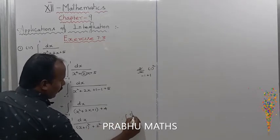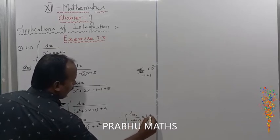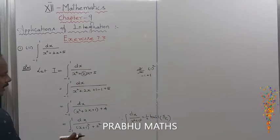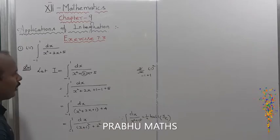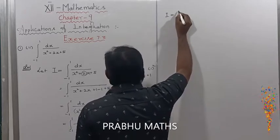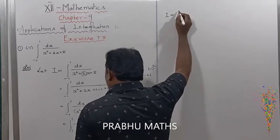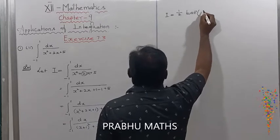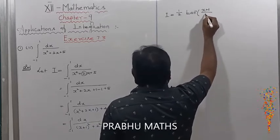The standard integral form: integral of dx divided by (x squared plus a squared) equals (1/a) times tan inverse of (x/a). Here x means (x plus 1) and a means 2. So the integrated value is (1/2) times tan inverse of (x plus 1) divided by 2.